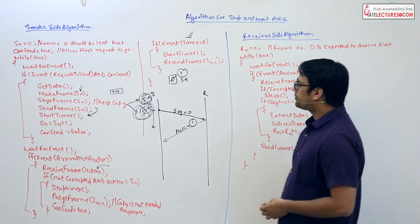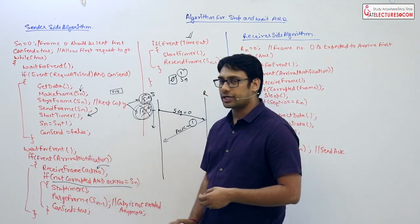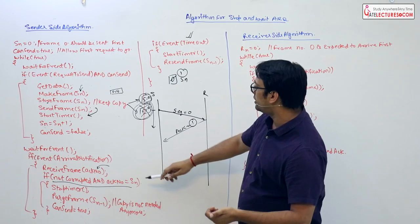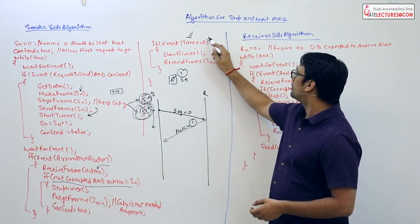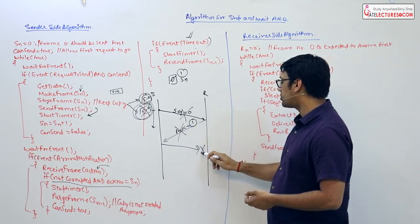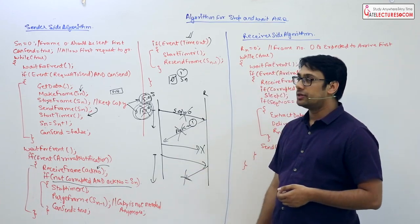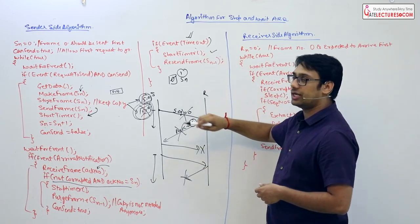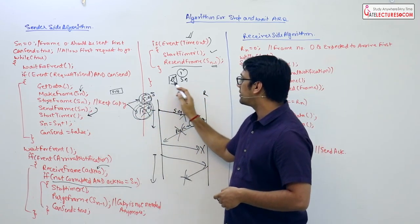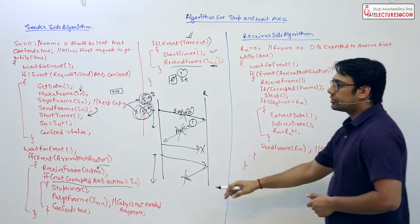If the data packet is not delivered perfectly or there is a timeout, we need to resend the same packet — that is why we keep the stored copy. If the event is a timeout timer expiry, it means the packet was lost or the acknowledgement was lost. In both cases the timeout timer expires, and we restart the timer and resend the packet with SN minus one.